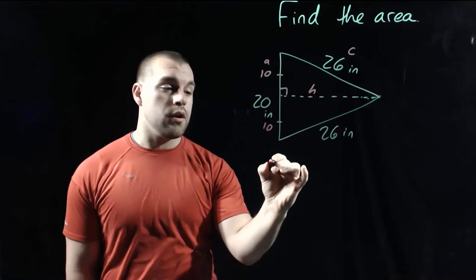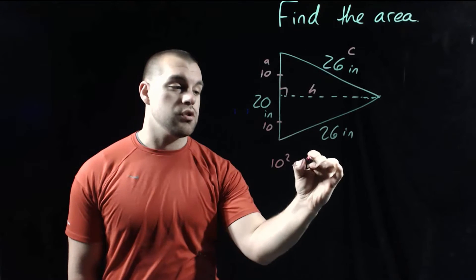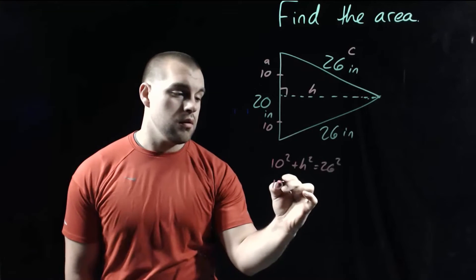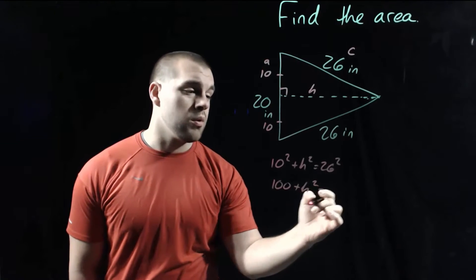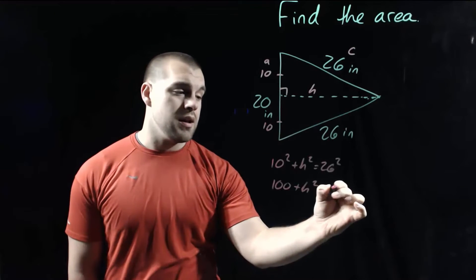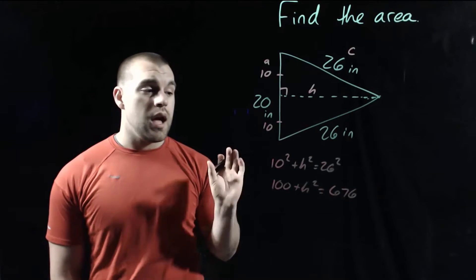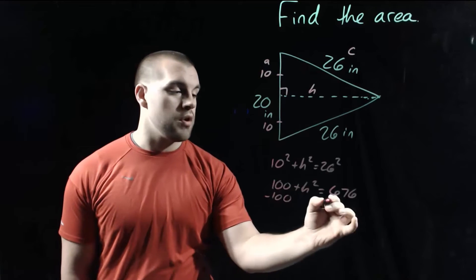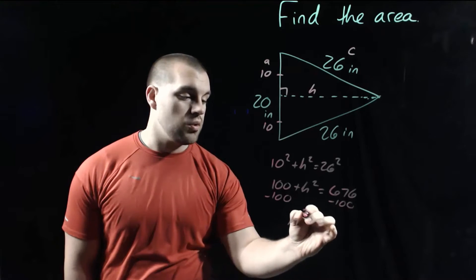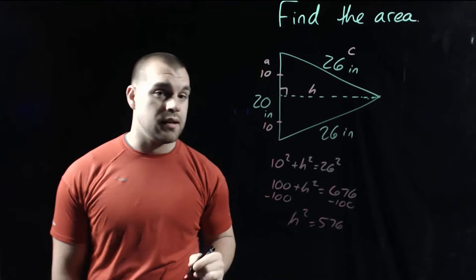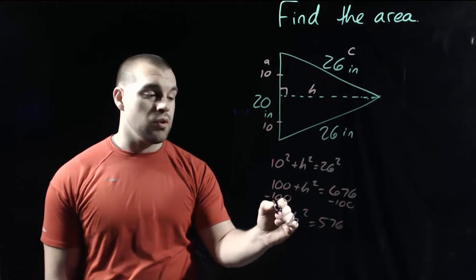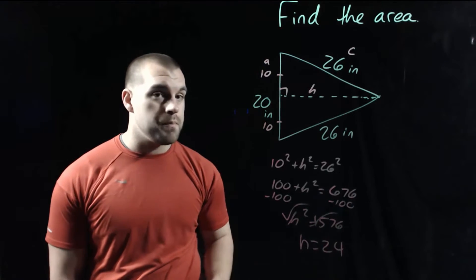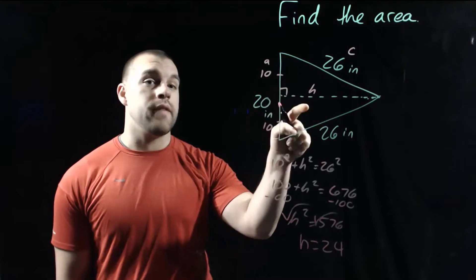So if we set up the Pythagorean theorem, we get 10 squared plus H squared equals 26 squared. Now 10 squared is 100, plus H squared equals 26 squared is 676. As we're solving this, we need to get H all by itself. So I'm going to subtract that 100 over to the right hand side. So we get H squared equals 576. Last step on this one is going to be to square root each side. So we get H equals 24. Now we're not done. We only found the H value.